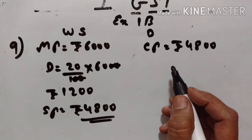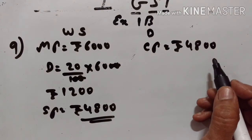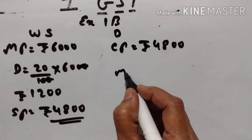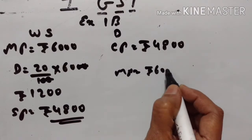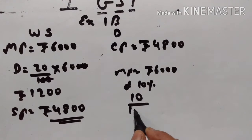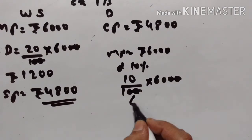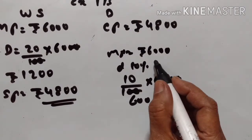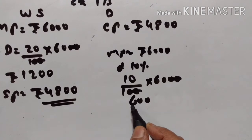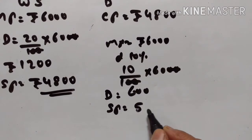The dealer further sells the article to a customer at a discount of 10% on the Marked Price. Marked Price is Rs.6000. Discount 10% means 10% of Rs.6000, which is Rs.600. So the selling price is equal to Rs.5400.